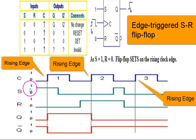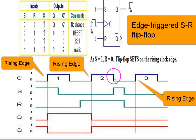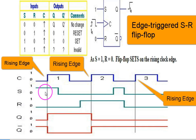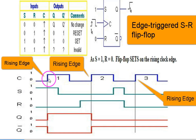If S is like this and R is like this, and the clock pulse is of this symmetric shape with equal time period, then what will be Q and Q-complement? We will find Q and Q-complement by focusing only at the rising edge. Just notice: at this rising edge, S is high and R is low.